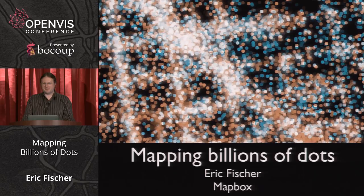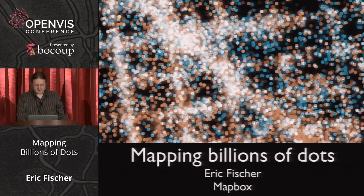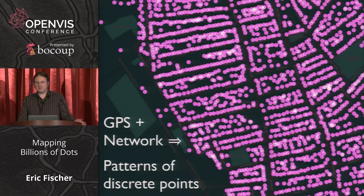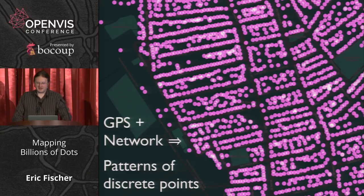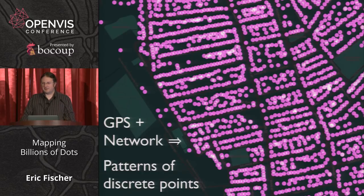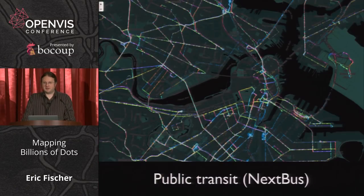I'm going to talk about what I've learned through exhaustive churning through one particular kind of design: making maps out of millions or billions of dots. The first point is why make maps out of dots at all? It's kind of a product of the era we're living in where we've got zillions of devices with GPS and network. They're not necessarily providing data meant to be a single event report, but when you take all these location reports coming through the network as discrete points, you get a pattern out of them when you put them all together.